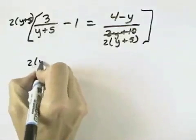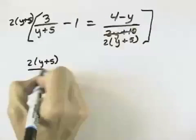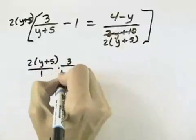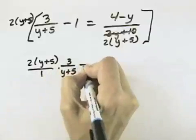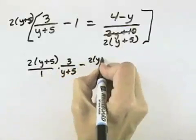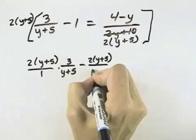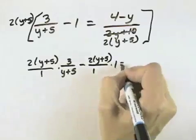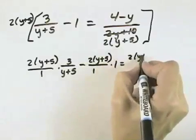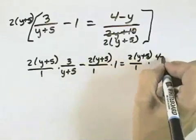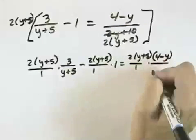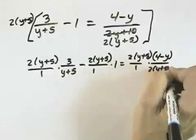So what we'll have is the 2 and the y plus 5 multiplied by the 3 over the y plus 5. Then we'll have minus the 2 times the y plus 5 multiplied by the 1 equals the 2 times the y plus 5 multiplied by the 4 minus y over the 2 times the y plus 5.